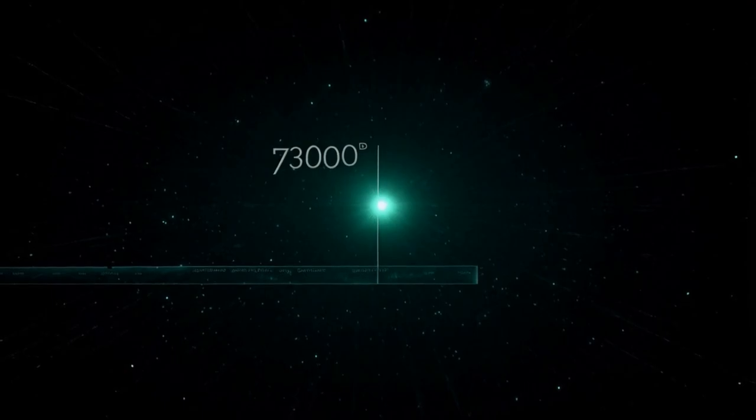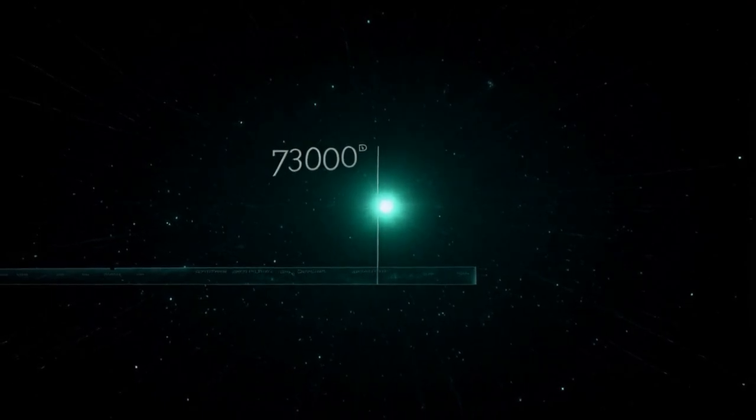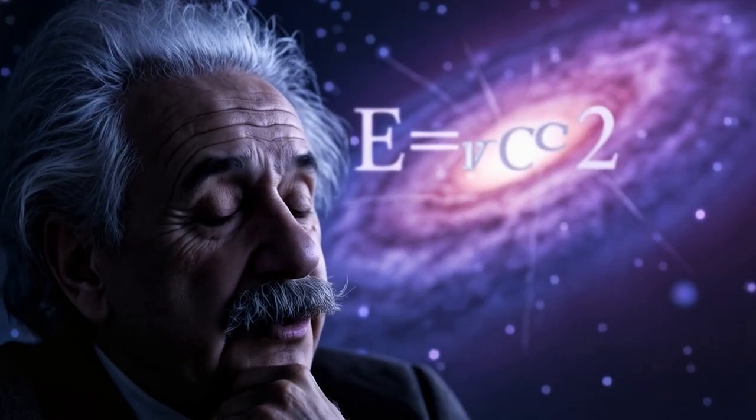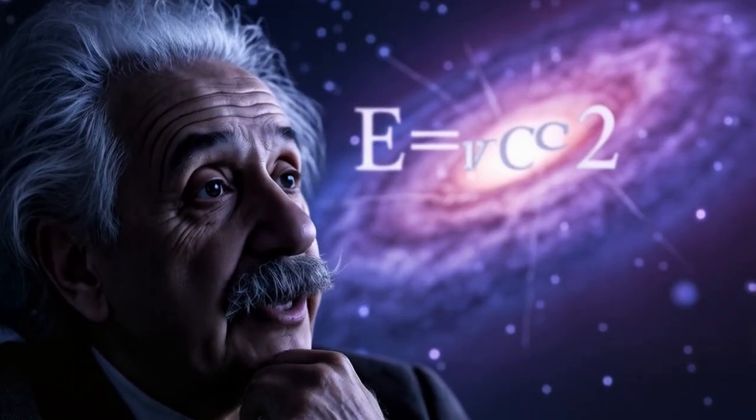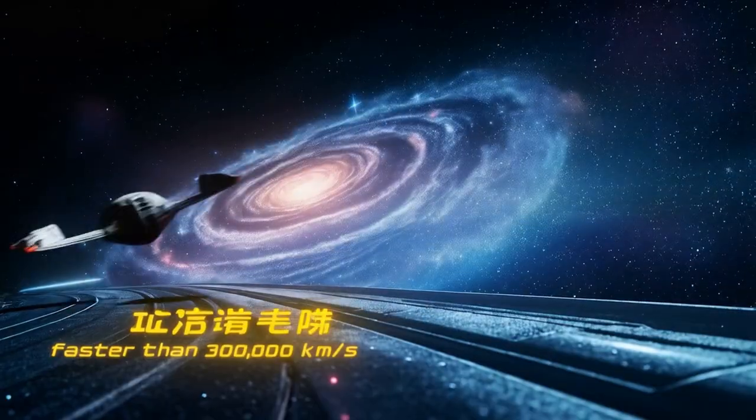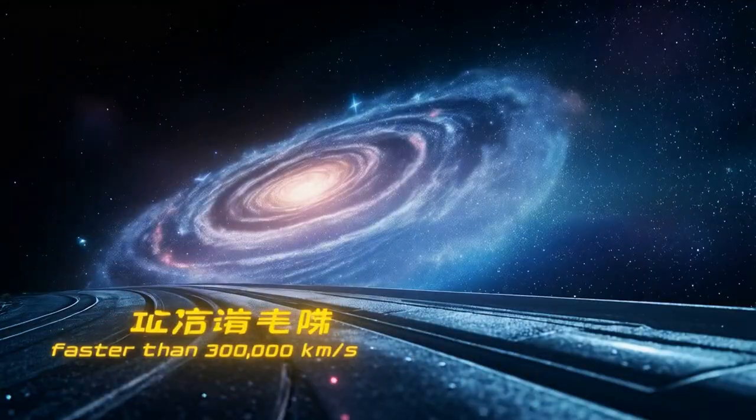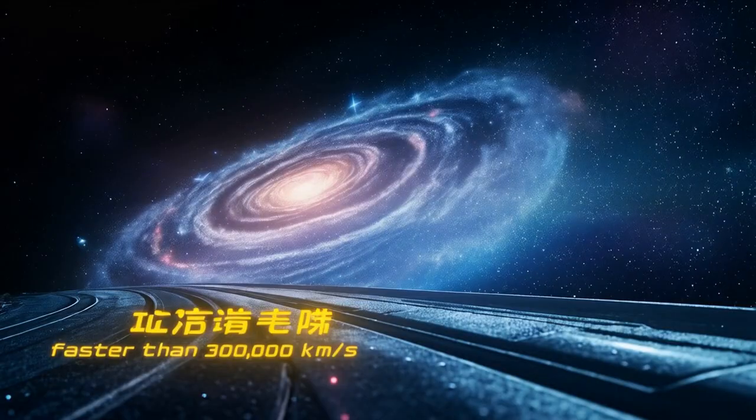By studying light from distant galaxies, Hubble noticed they were all moving away from us, and the farther away they were, the faster they seemed to be receding. This discovery flipped our understanding of the cosmos upside down, showing that the universe isn't static, it's growing.